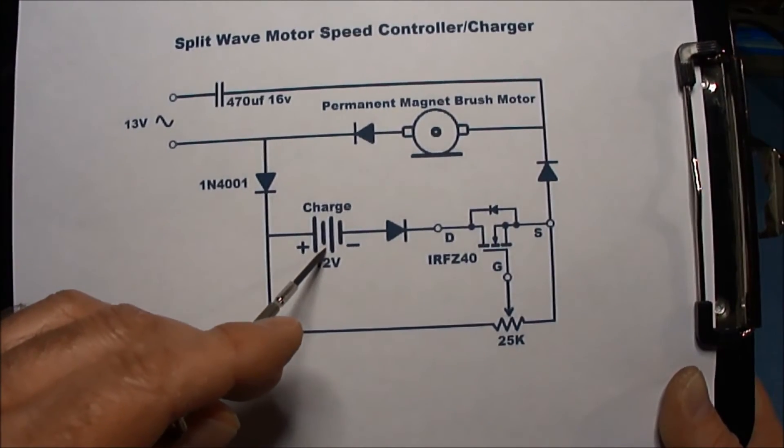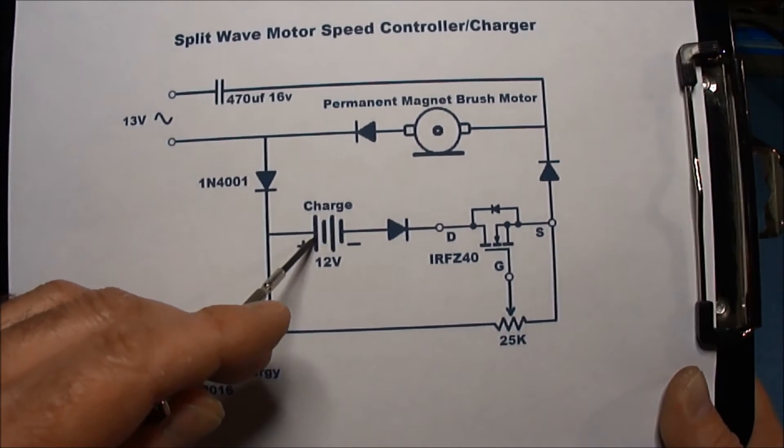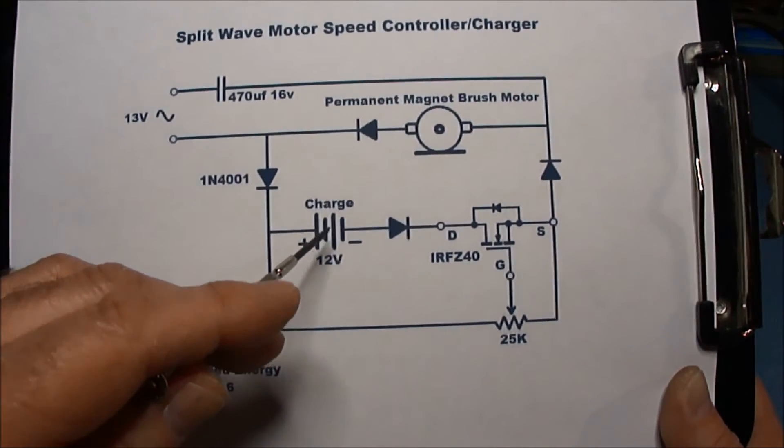Now what you put in here, in this section, you can replace this battery with almost anything. And you'll have a DC pulse going through it. It's not critical what you put there.